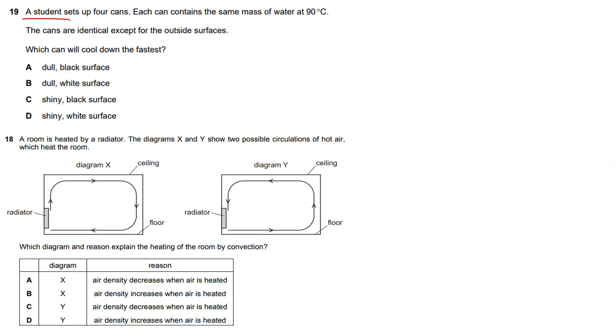A student sets up four cans. Each can contains the same mass of water at 90 degrees Celsius, so the temperature is the same for each can. The cans are identical except for the outside surfaces—identical means the same in size and shape, but the outside surfaces are different. Which can will cool down the fastest?